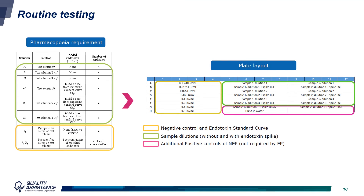After this validation, QC routine tests will be performed using three different dilutions — 20-fold, 40-fold, and 80-fold dilutions of the sample — as described in the European Pharmacopeia. Each sample dilution is tested with and without endotoxin spike in order to check the validity of the test. Heat-killed Staphylococcus aureus is used as an additional control for the detection of non-endotoxin pyrogens within the lowest dilution of the sample. A maximum of two different samples can be tested per plate.